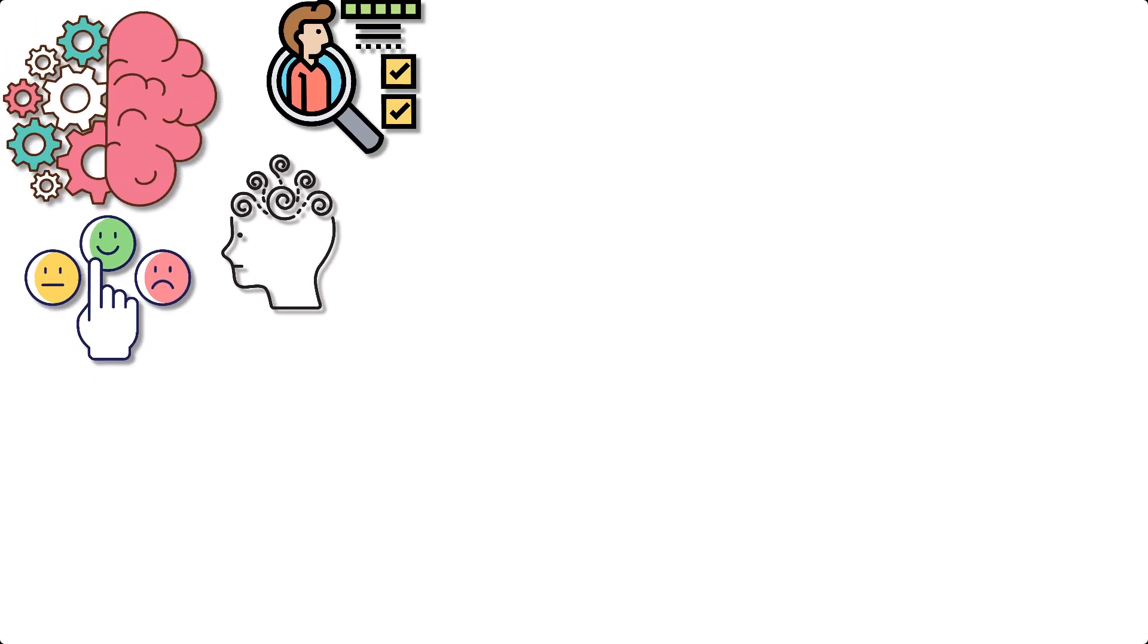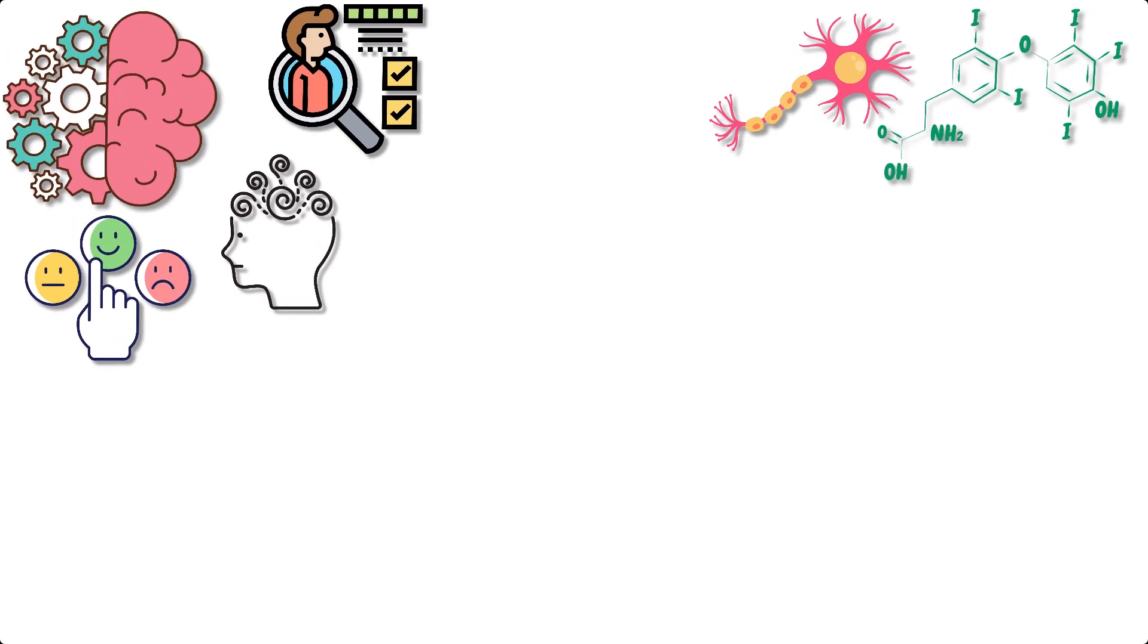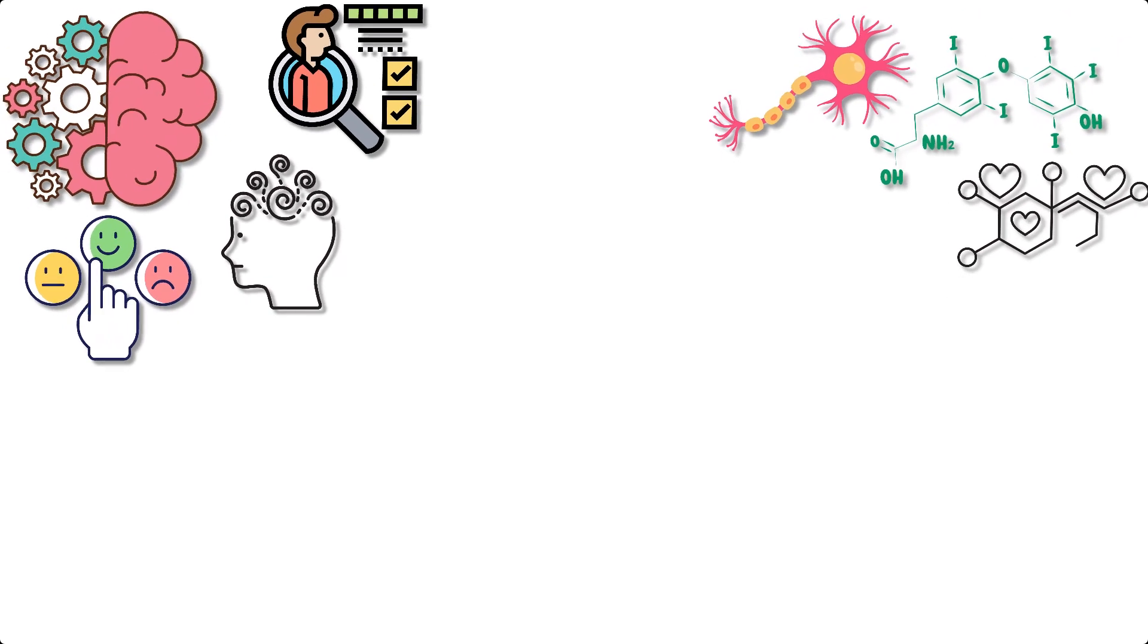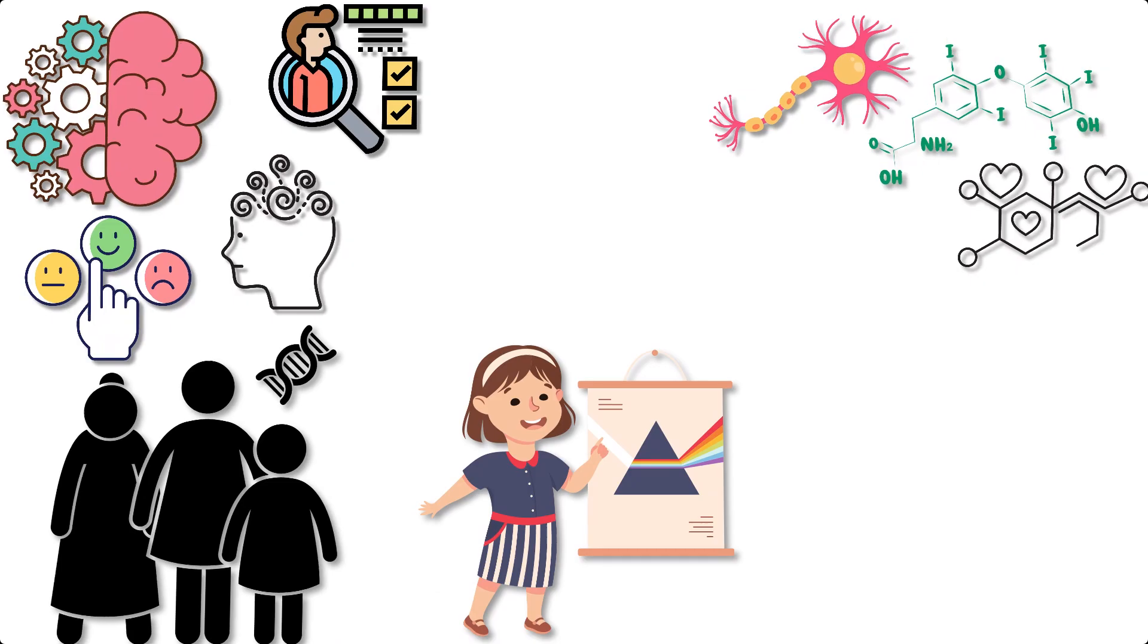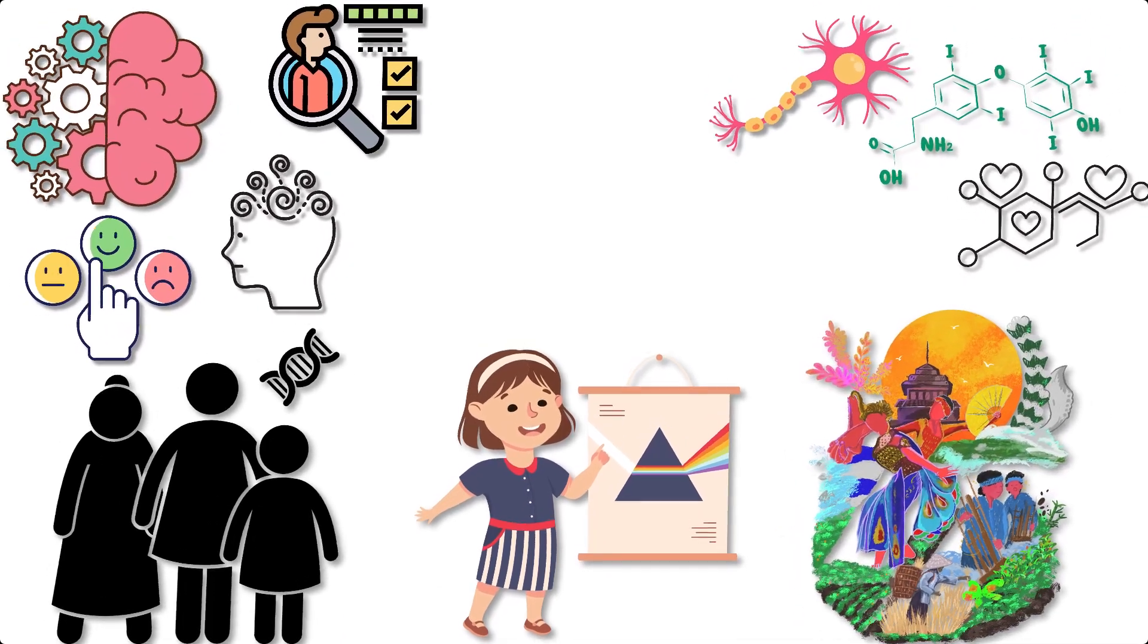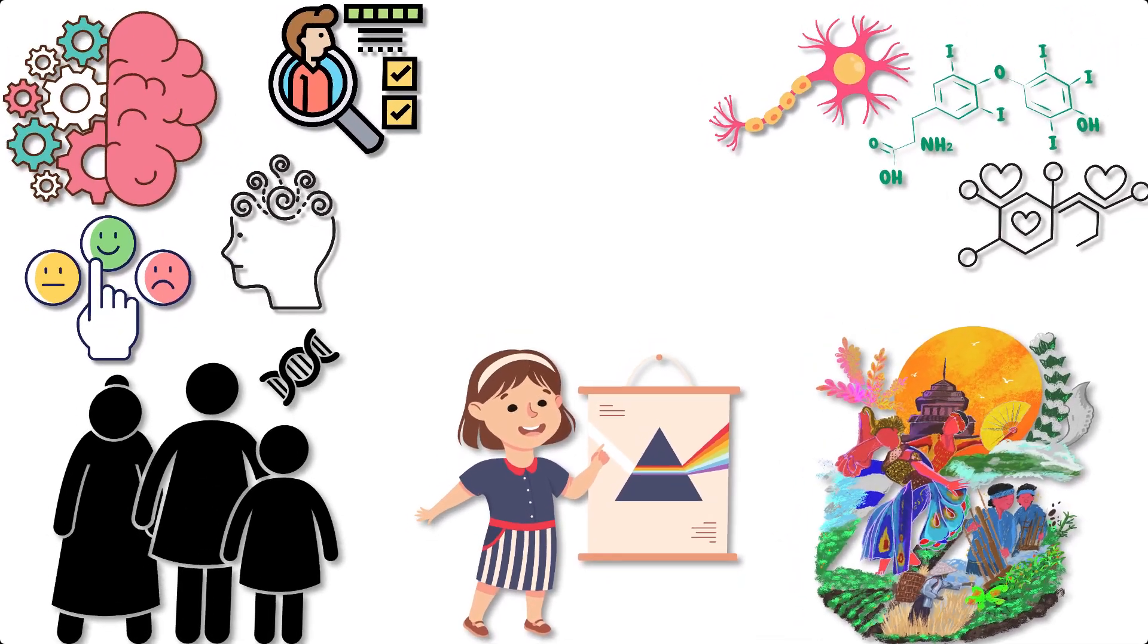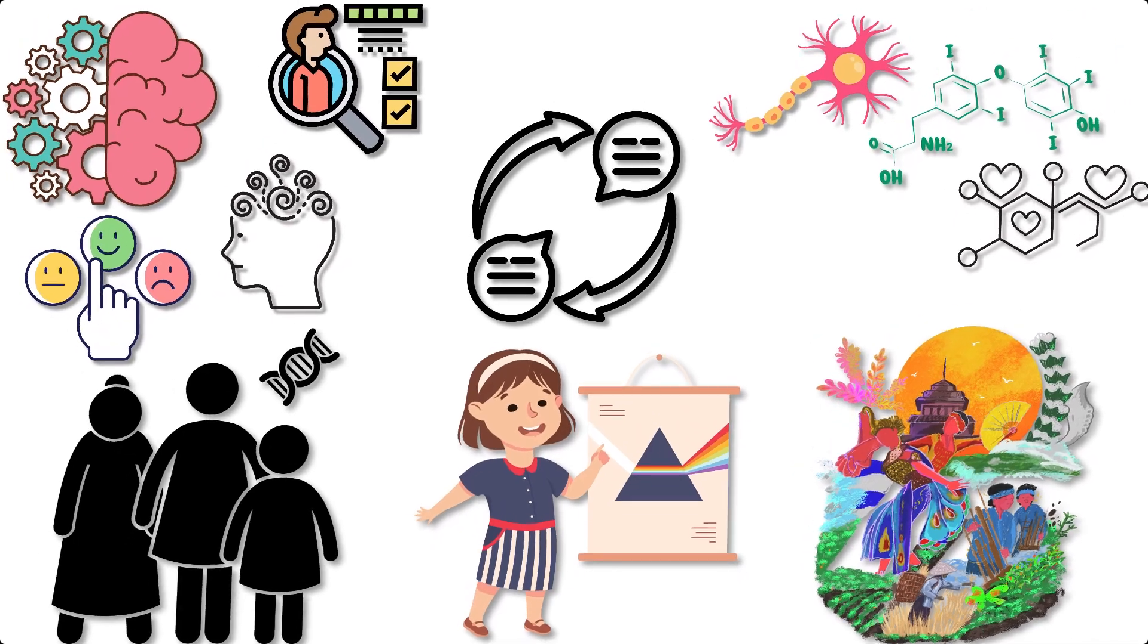Sapolsky begins by delving into the intricate workings of the human brain, examining how our thoughts, emotions, and behaviors arise from the interplay of neurons, neurotransmitters, and hormones. He highlights the role of genetic predispositions, early life experiences, and cultural influences in shaping our neural architecture, which ultimately determines our responses to stimuli.